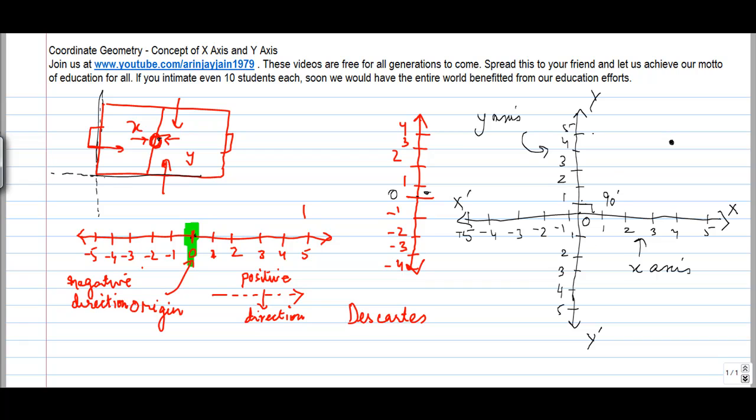So both these lines are same except that this is vertical, this is horizontal. X-axis is horizontal. Y-axis is vertical.